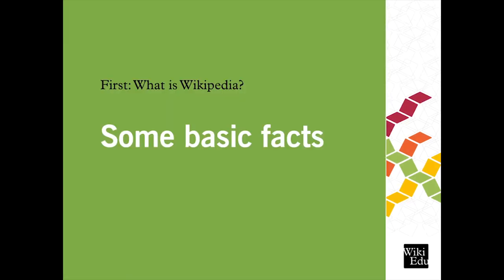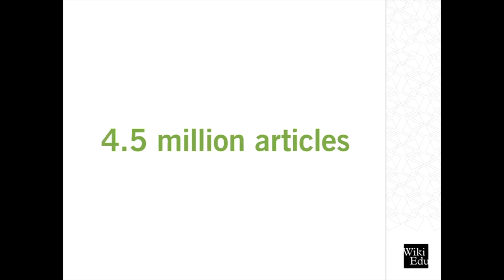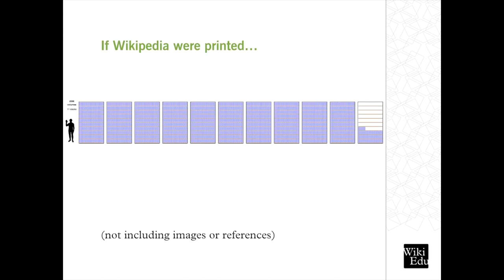To understand how to use Wikipedia as a teaching tool, we need to start with a little bit of basic information about Wikipedia. For starters, it's the fifth most visited website in the world. English Wikipedia alone has 4.5 million articles, which, if you printed this out, would make up 2,000 volumes of a traditional encyclopedia. This means that Wikipedia is a huge online reference — a tertiary source that summarizes research and information about millions of topics for its readers.